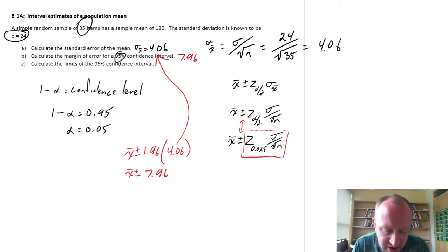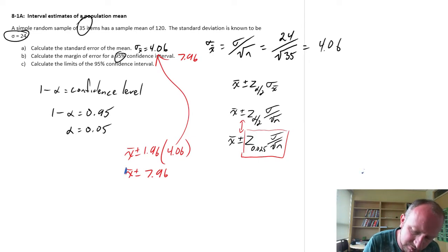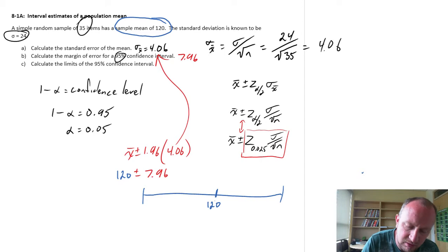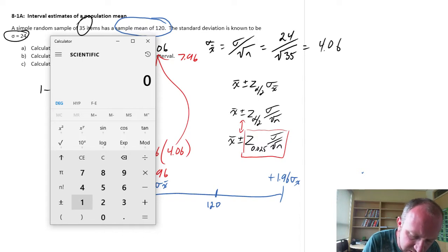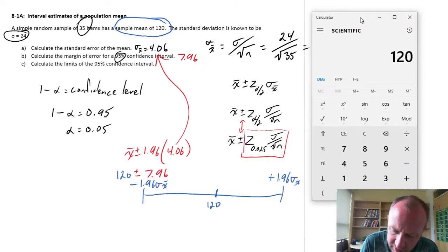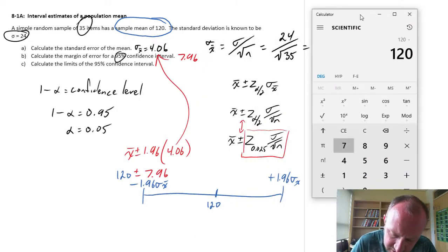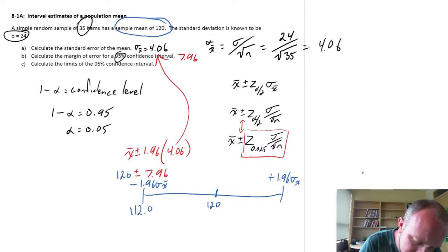And then calculate the limits of the interval. Well, all we have to do now, so now all I need is my sample mean, which is given in the problem, sample mean of 120. So to calculate those limits of that interval, my sample mean goes right in the middle, and then this is plus one margin of error, this is minus one margin of error from that sample mean. So let's just do that, 120 minus 7.96, so that's 112.04, and then this will be plus 7.96, so this is 127.96.